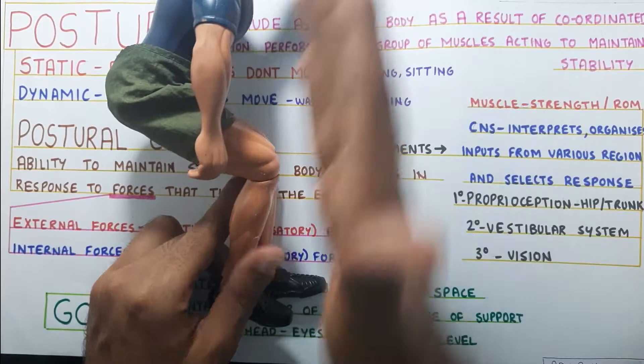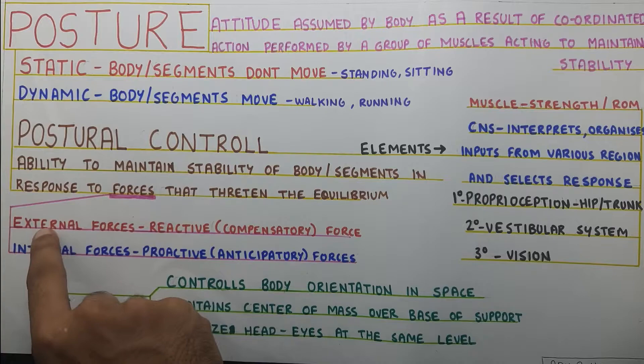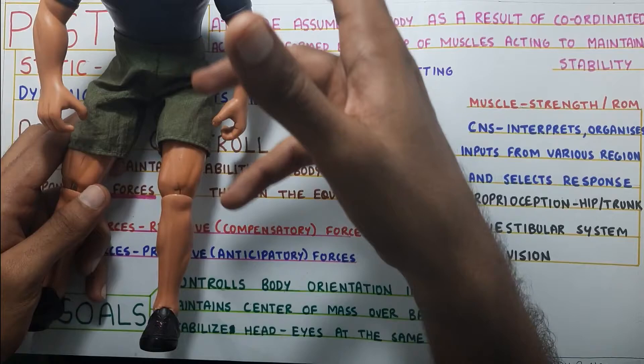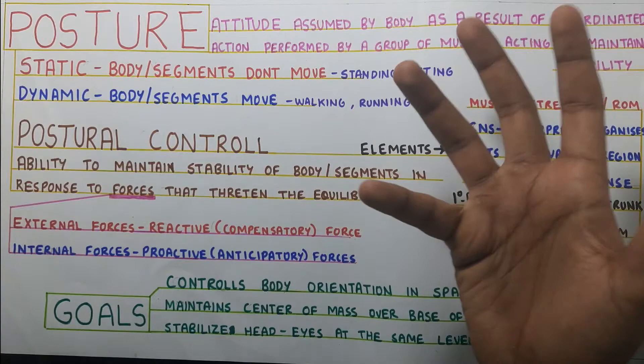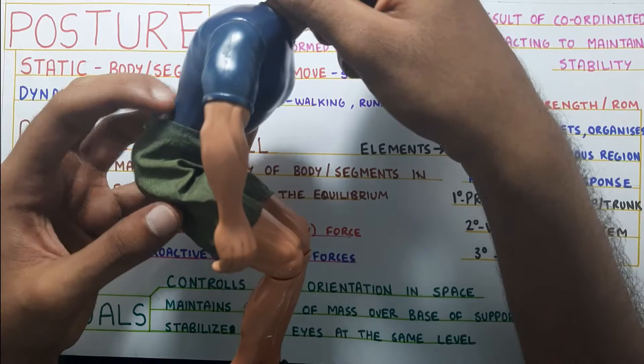Those are the two types of forces — internal and external. When there is an external force, the reaction is called a reactive or compensatory force. When I push Joe aside, he'll step and get his balance back. Postural control can be maintained by compensatory force through stepping or different strategies called muscle synergies, which we'll cover in the next video. The internal force response is called the proactive force — for example, bending the knee or contracting posterior muscles to maintain balance.